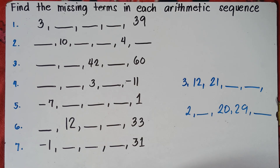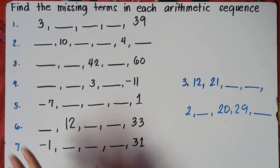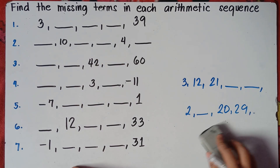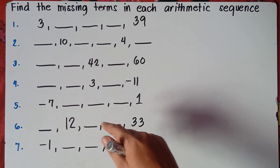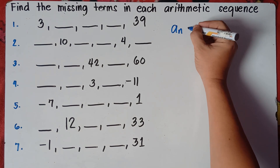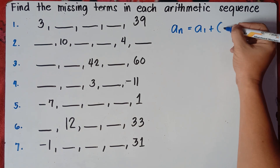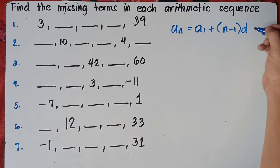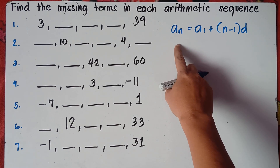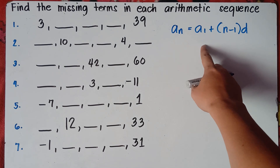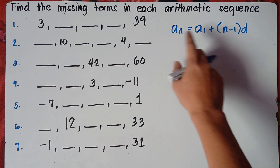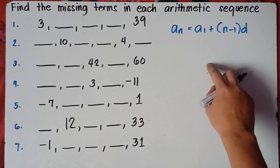Now, what if we have an example where terms are not consecutive? So we will be answering problems 1 to 5, and then you try 6 and 7. The thing we will do is use the formula: a sub n equals the first term plus n minus 1 times the common difference. Here, a sub n is the general term — this will be the last given term. a sub 1 is the first term, n is the number of terms, and d is the common difference.